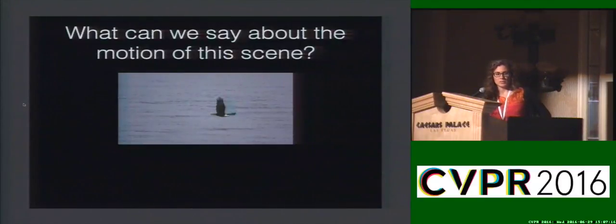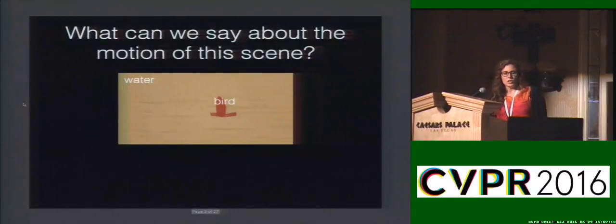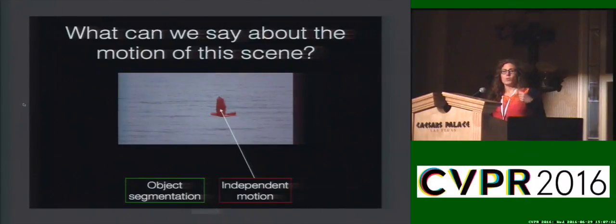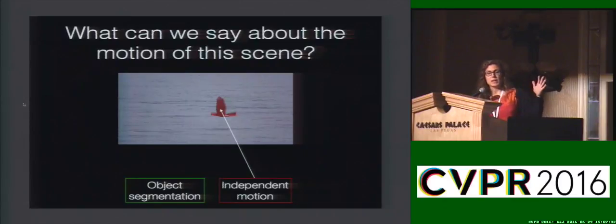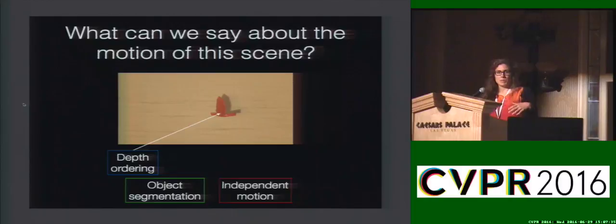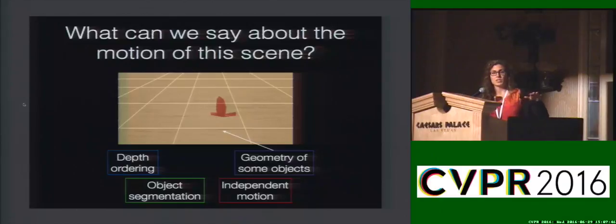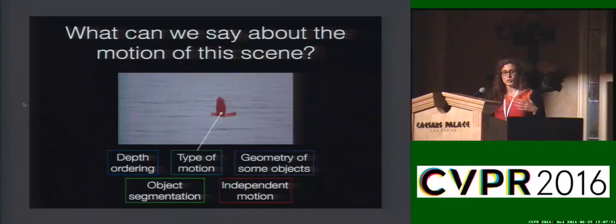What can we say about the motion of this scene? If we know that there are two regions corresponding to water and a bird, then we know the object segmentation. We also know what objects are capable of moving independently — for example, the bird will be moving independently from the water. We also know the depth ordering, so in this case the bird will be moving in front of the water. We also know the geometry of some of the objects, so for example the surface of the water will be roughly planar. We also know the type of motion of some objects — for example, the bird will be moving non-rigidly.